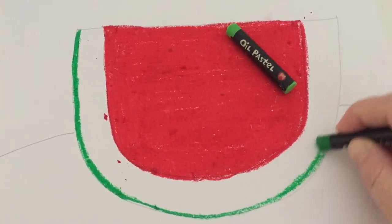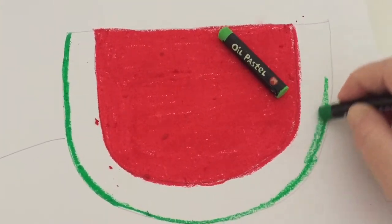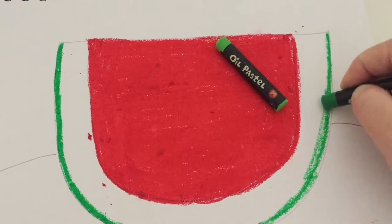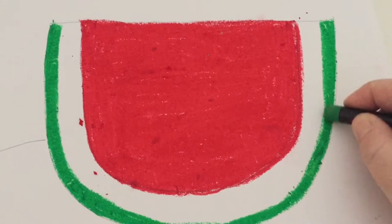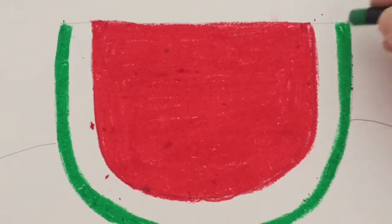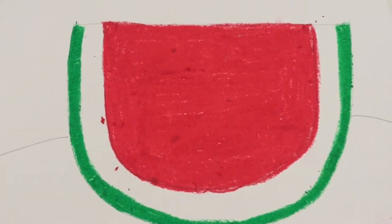I'm going to colour that in and get a nice thick edge on the rind of my watermelon. I'll do a second line of that to make it a little bit thicker.